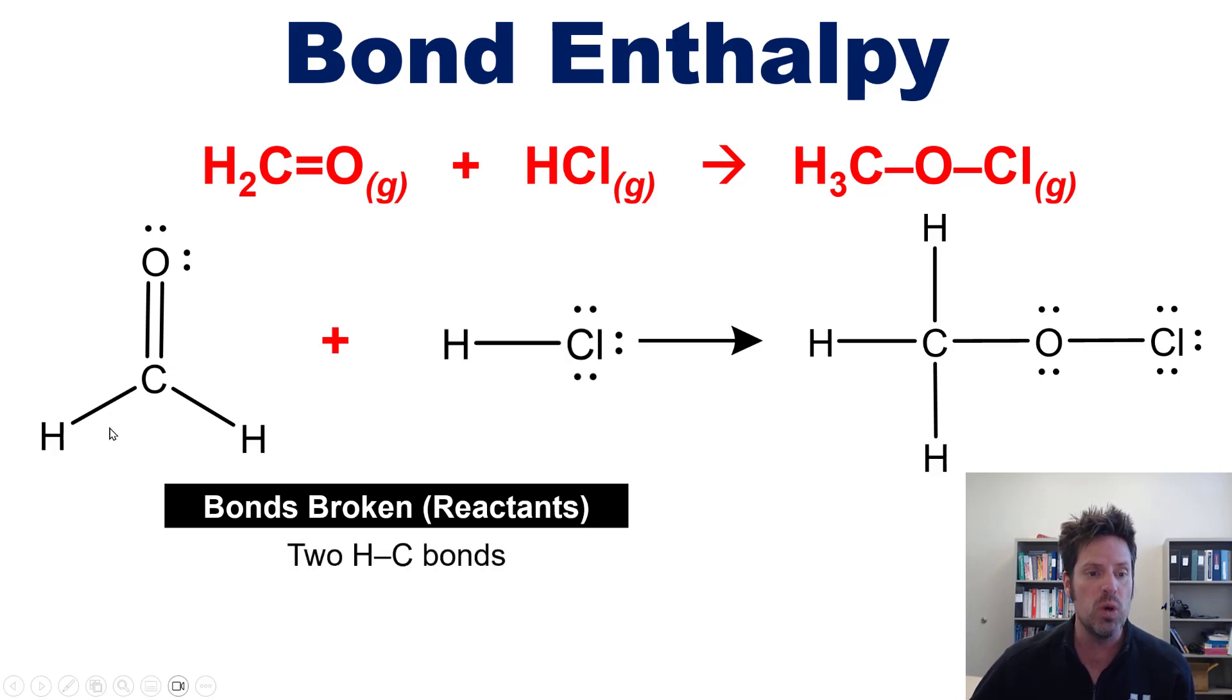Well you can see that I've got two carbon hydrogen single bonds right here. I also have one carbon oxygen double bond right here and I have one hydrogen chlorine single bond right there. And what are the overall enthalpy values for these?